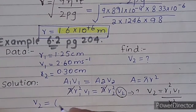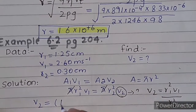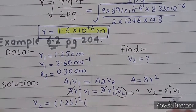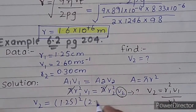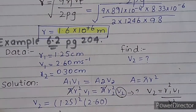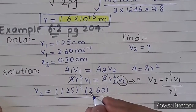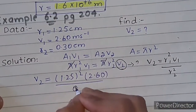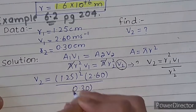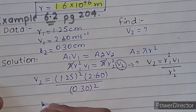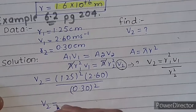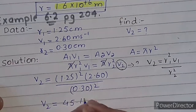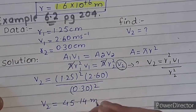Solving for v2: v2 = r1²v1 / r2². With r1 = 1.25 cm, v1 = 2.60 m/s, and r2 = 0.30 cm, we get v2 = (1.25)² × 2.60 / (0.30)² = 45.14 m/s.